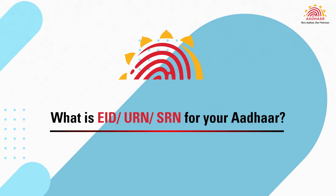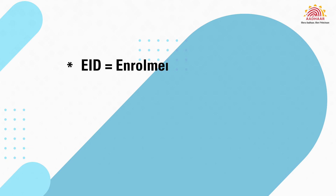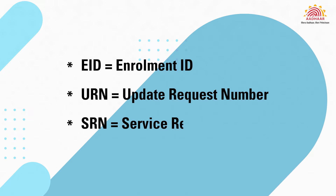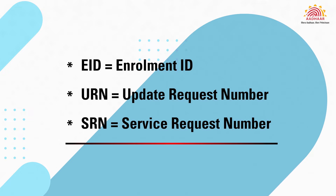What is EID, URN, and SRN for your Aadhaar? EID is Enrollment ID, URN is Update Request Number, and SRN is Service Request Number.